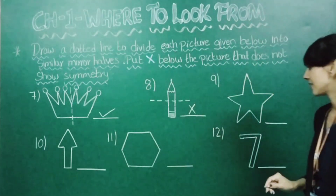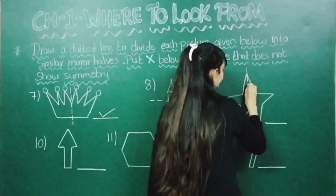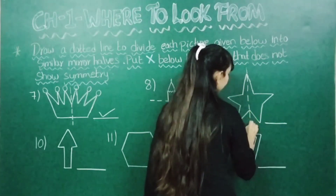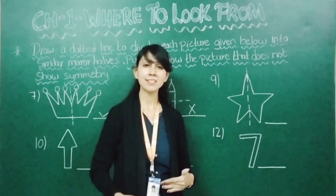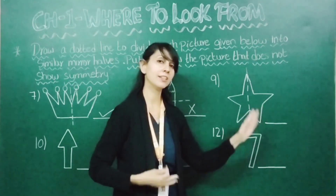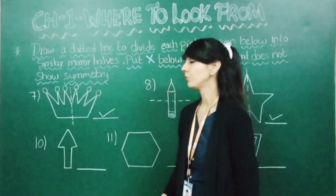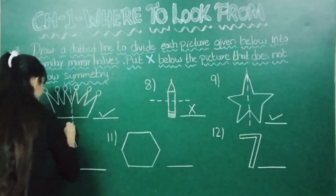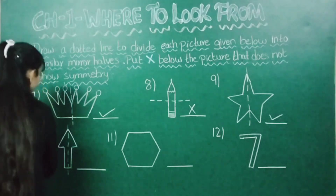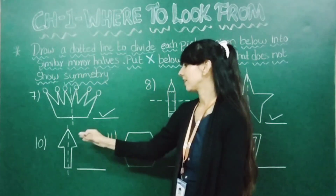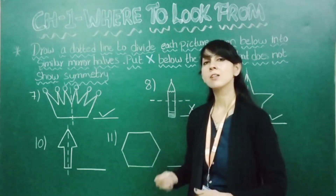Next picture is a star. Drawing the dotted line — do you get the same parts on both sides? Yes. This shows symmetry, so we put a tick. Next is an arrow. Drawing the dotted line at the center — do you get the same image on both sides? Yes. This shows symmetry, so we put a tick.